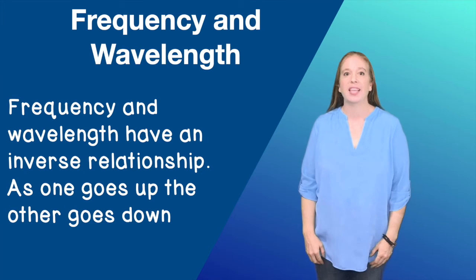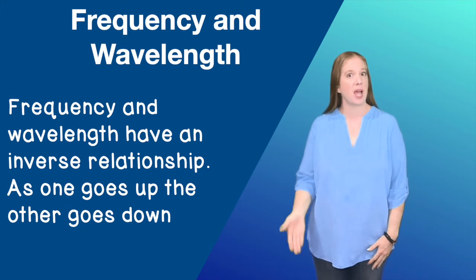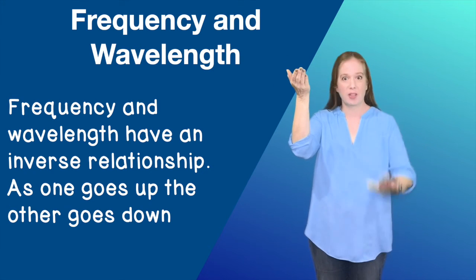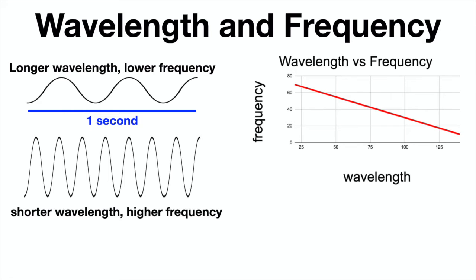Frequency and wavelength have an inverse relationship. As one goes up, the other goes down. As you can see, as you decrease the wavelength, more waves are able to travel in the timeframe of the 1 second. So as you decrease the wavelength, you actually increase the frequency, giving wavelength and frequency an inverse relationship.